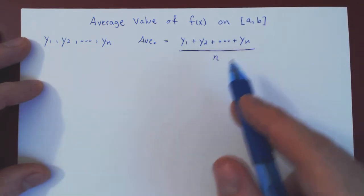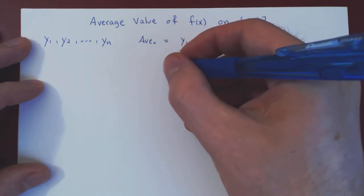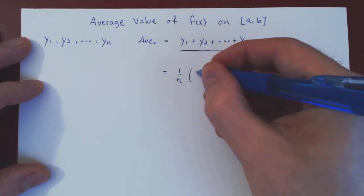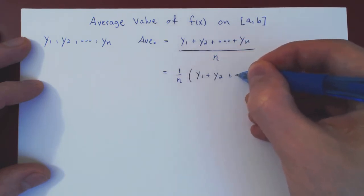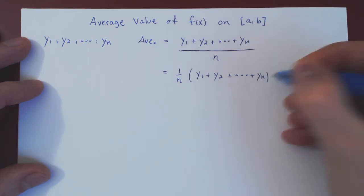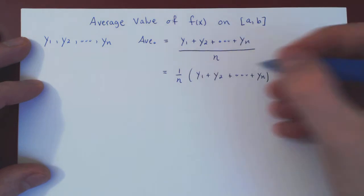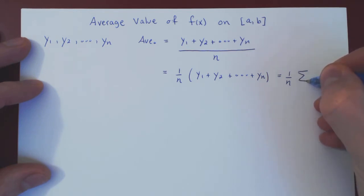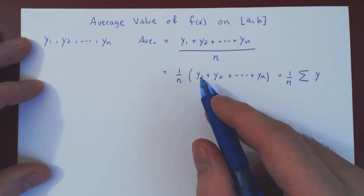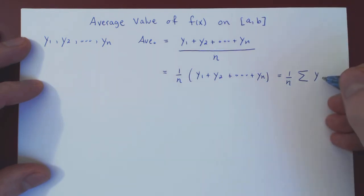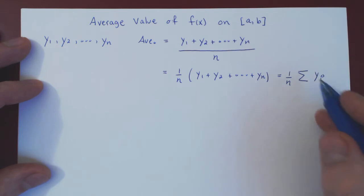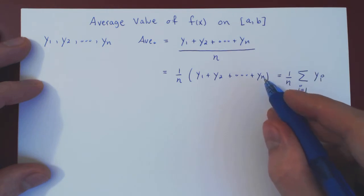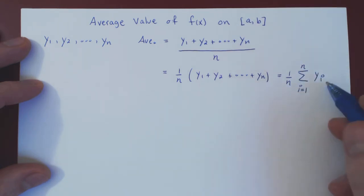We can write this more concisely using sigma notation. We factor out 1 over n, and we're left with the sum of the y values. So this is (1/n) times the summation as i goes from 1 to n of yi. This is the average value.